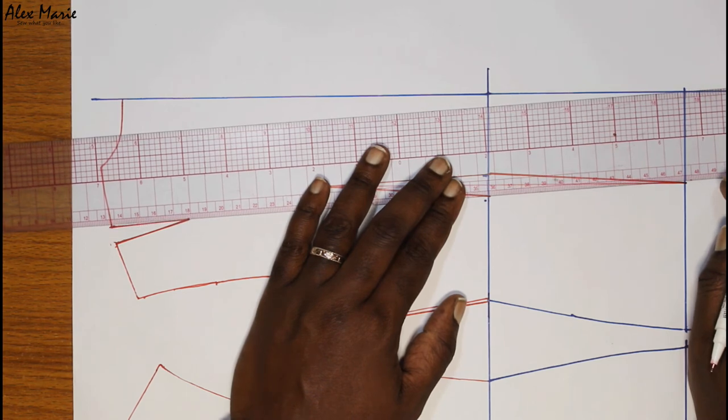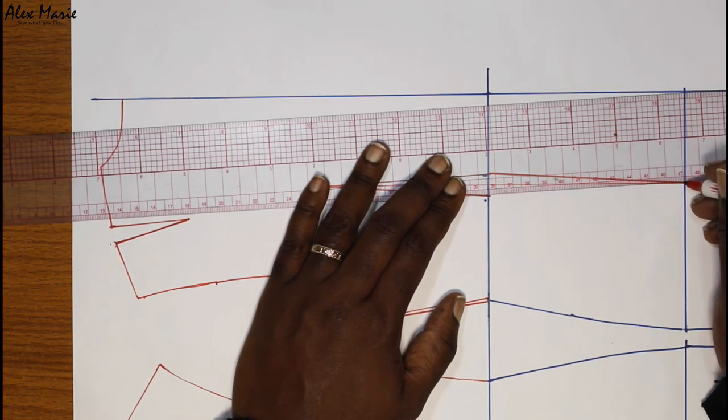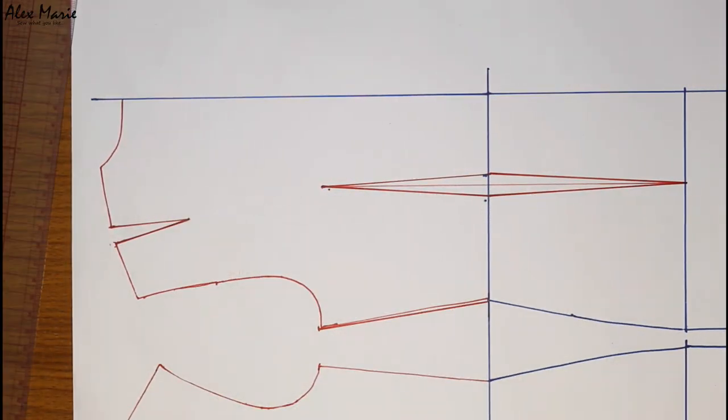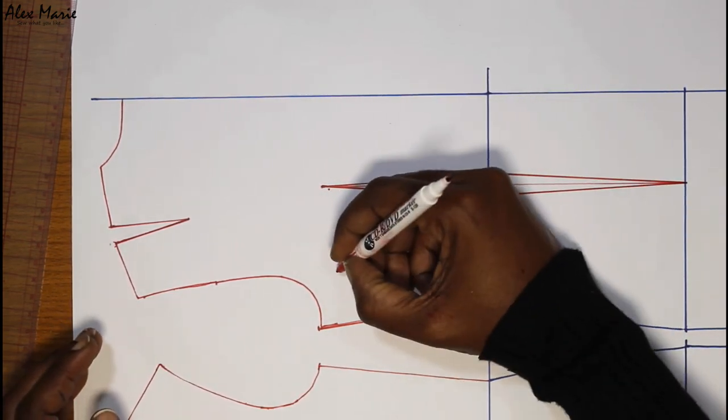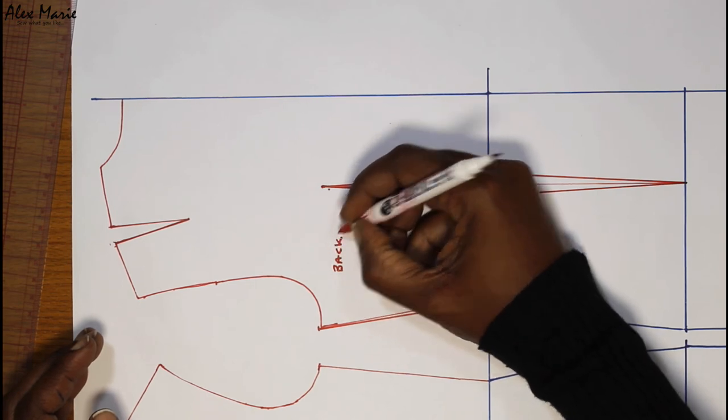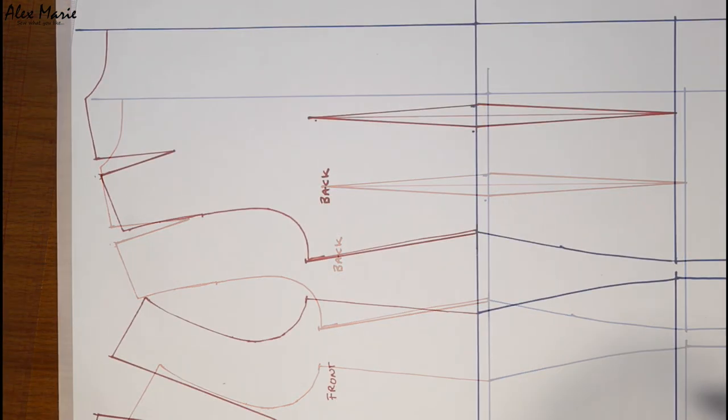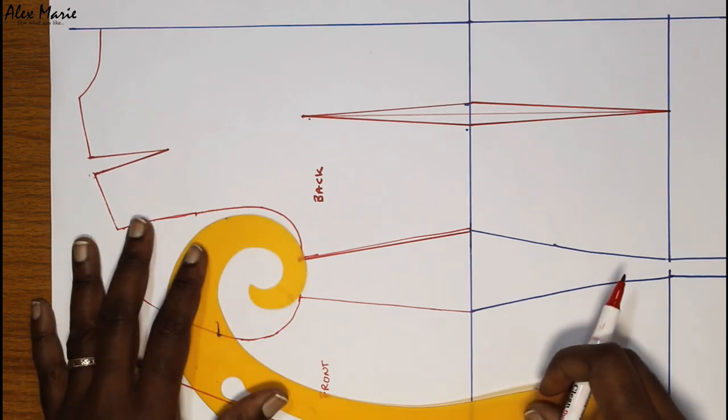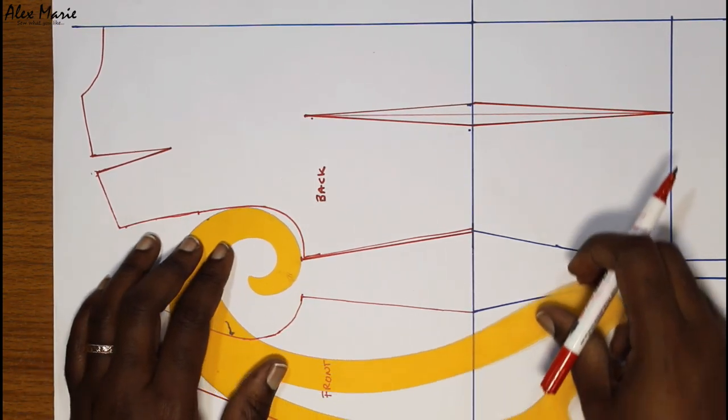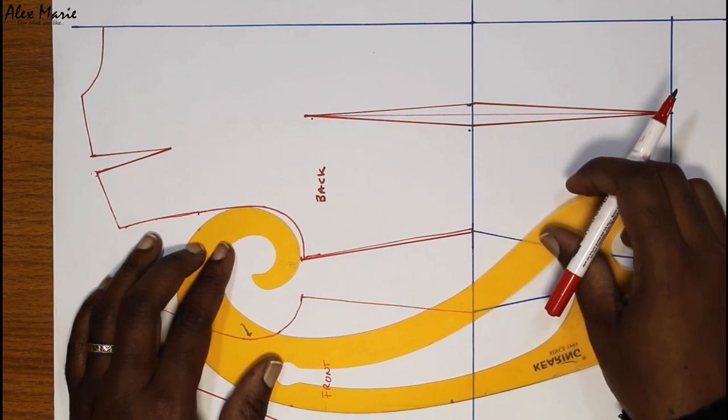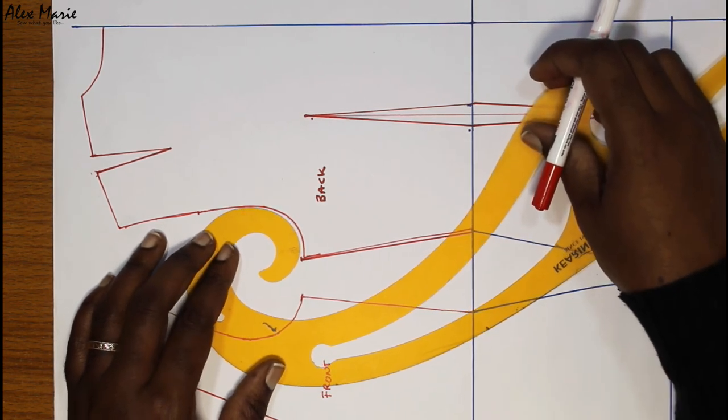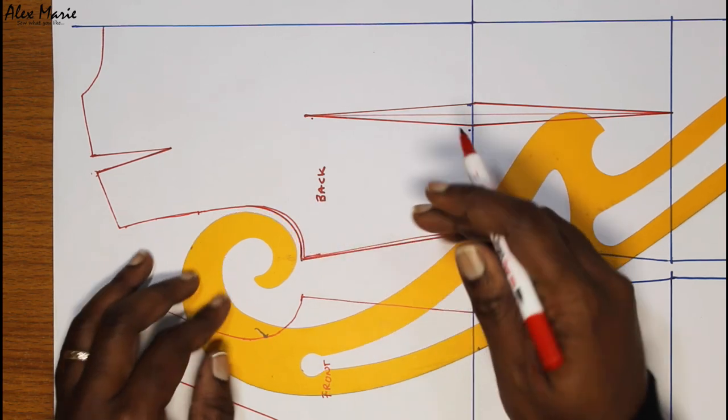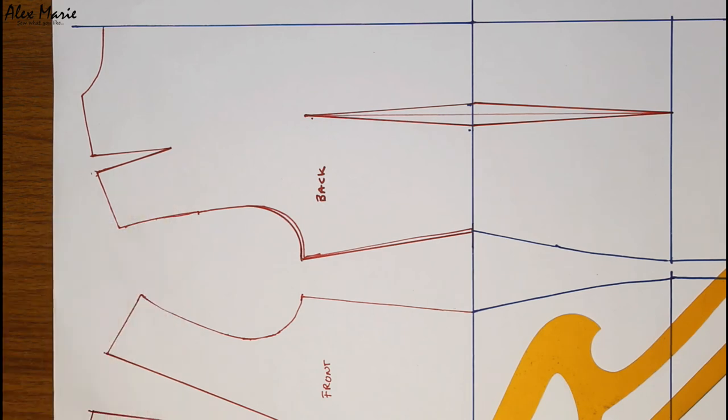So that's the waist dart, that's the back and as always you can extend this down to the hem so this is our back and that is essentially it. So as the last thing, the side came up a little more, we are just going to reconnect to the original armhole and it's done, this is your dress back.